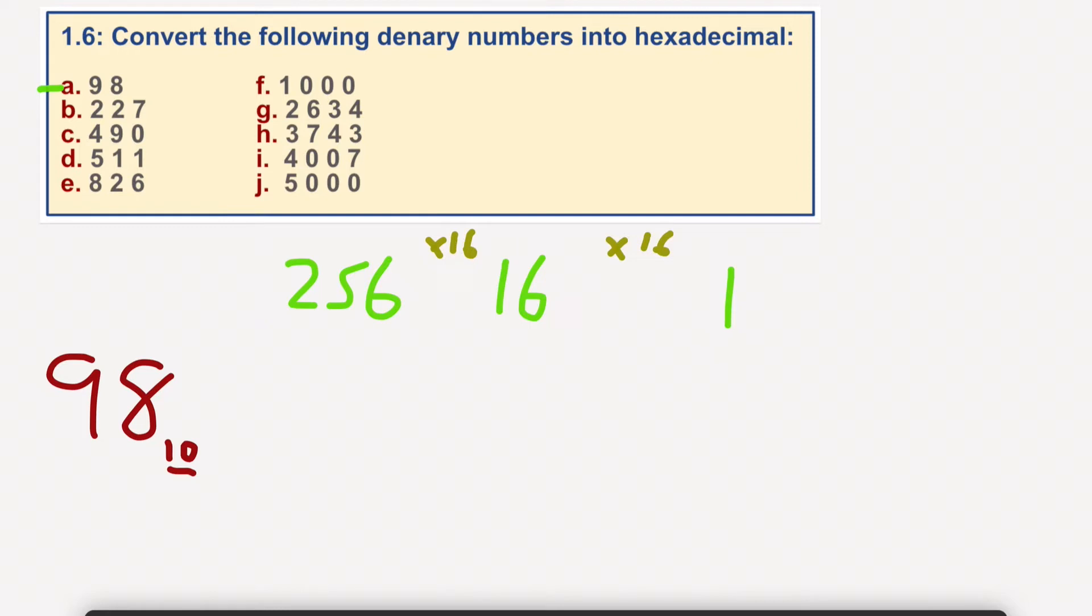So first of all, obviously 256 doesn't go into 98, but 16 does. But how many times does 16 go into 98? 98 divided by 16. Well, 6 times 16 would equal 96, so I can put a 6 in here. Okay, and how many is left over? There's 2.